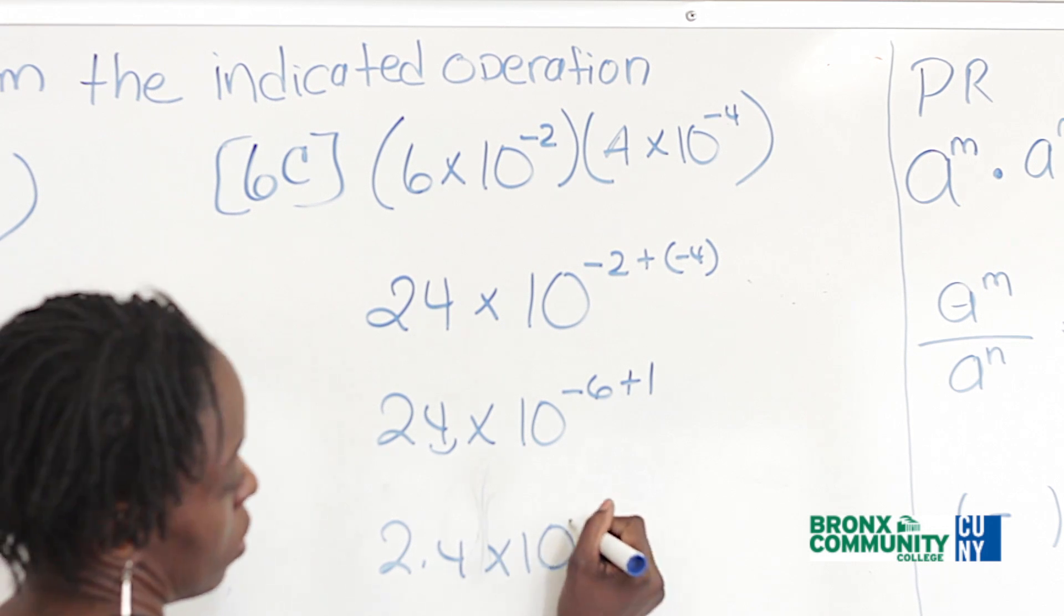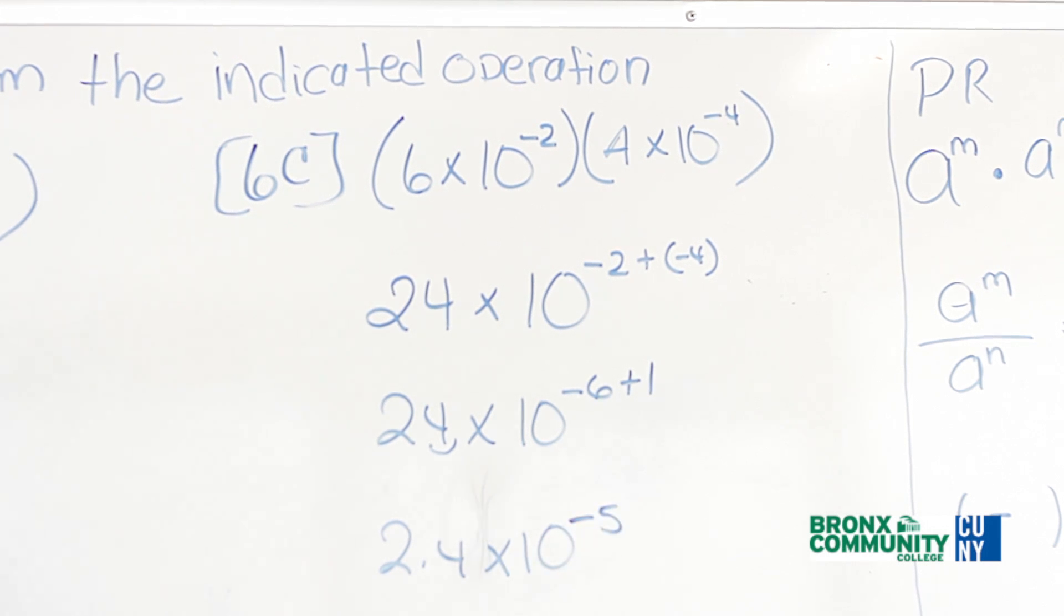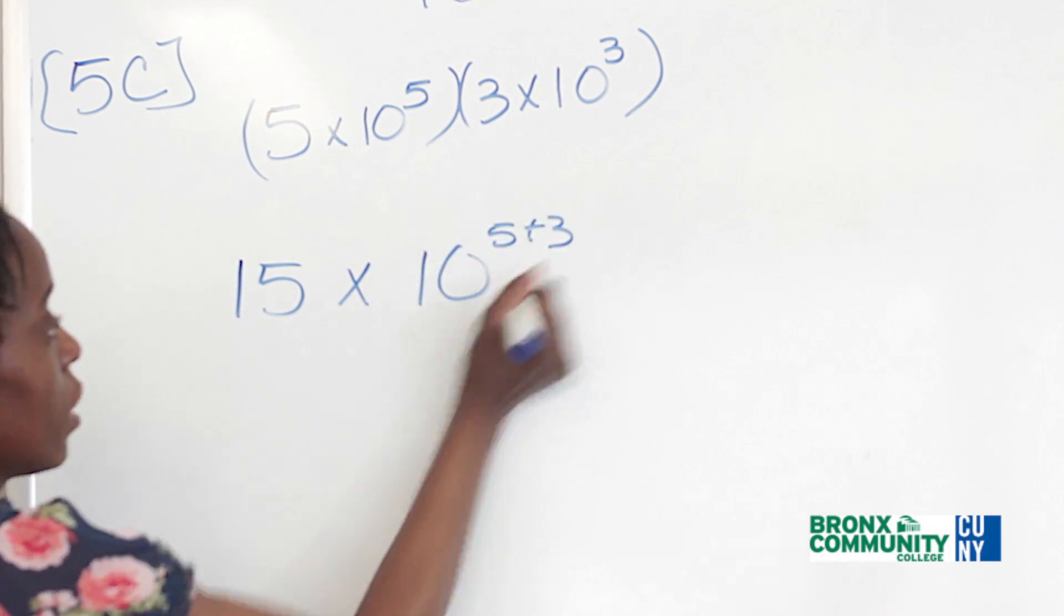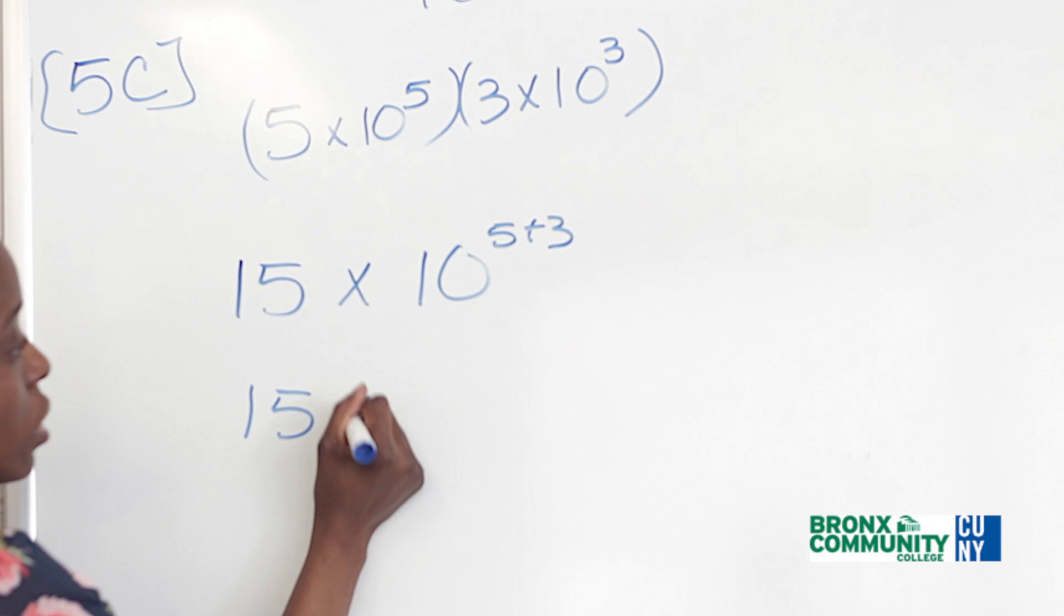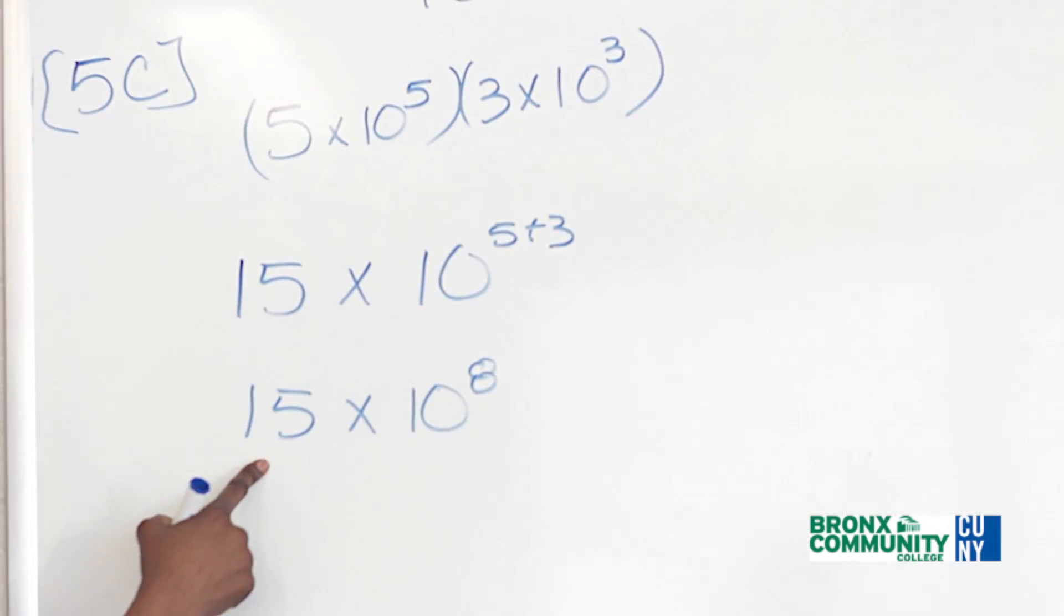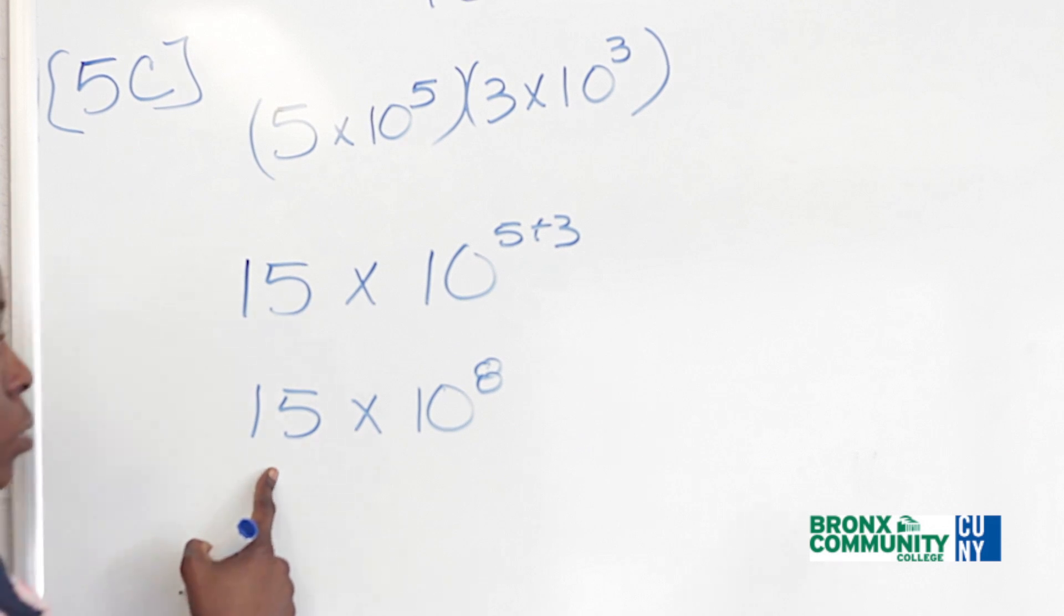And this becomes negative 5 times 10. This is 5 plus 3, so we have 15 times 10 to the 8th. So then we've got to move it, so it'll be 1.5 times 10 to the 9th.